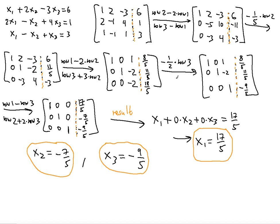In Gaussian elimination you stop earlier — with non-zero values still remaining above the diagonal — and then depend on previous variables during back substitution. Gauss-Jordan ensures only leading ones remain as coefficients, providing a direct shortcut to the solution. Hope this was helpful — thanks for watching, see you in the next video.